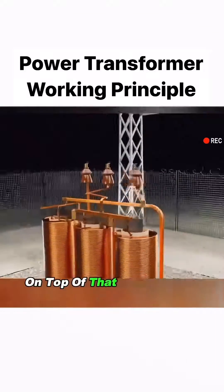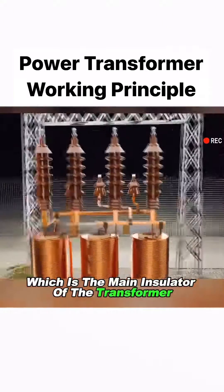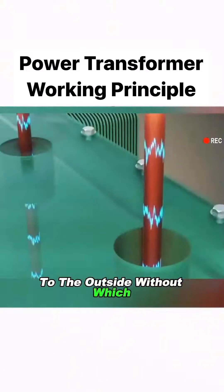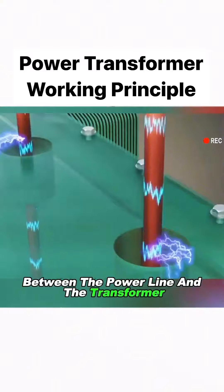On top of that, there is the ceramic bushing, which is the main insulator of the transformer to the outside. Without it, an electric arc would be generated between the power line and the transformer, causing a short circuit.